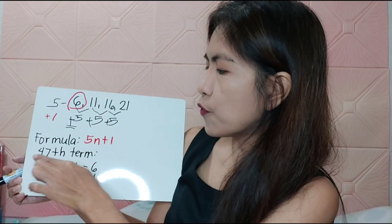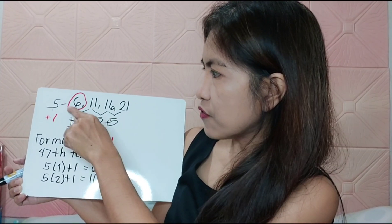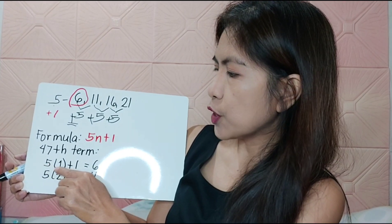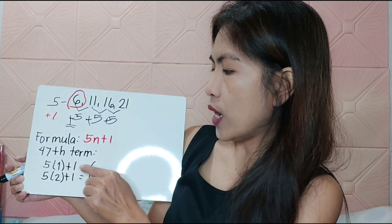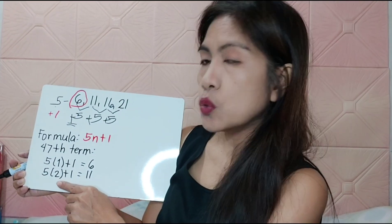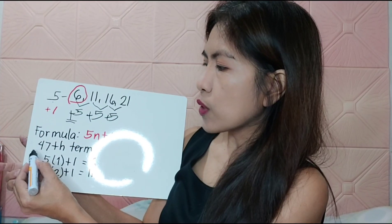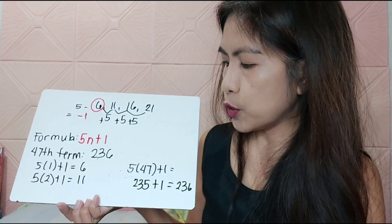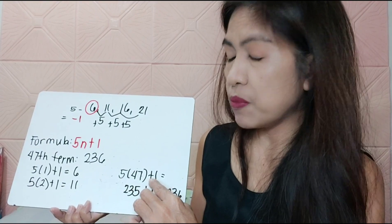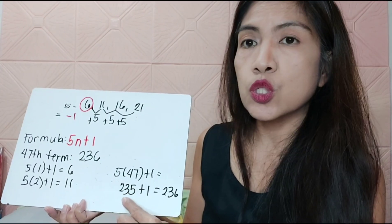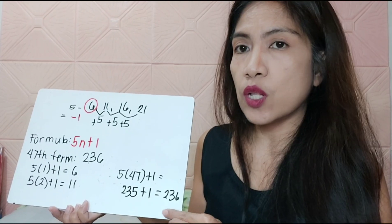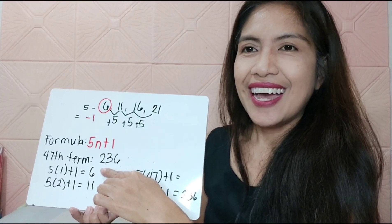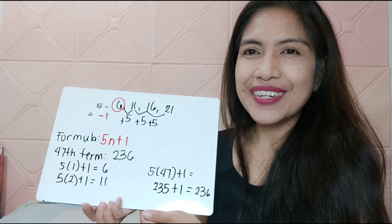So we're going to locate the 47th term. Let's check if the formula is correct: 5m plus 1. For the first term, 5 times 1 plus 1 is 6. For the second term, 5 times 2 plus 1 is 11. Now for the 47th term, it's 5 times 47 plus 1. So 5 times 47 is 235, plus 1 equals 236. So your 47th term is 236.